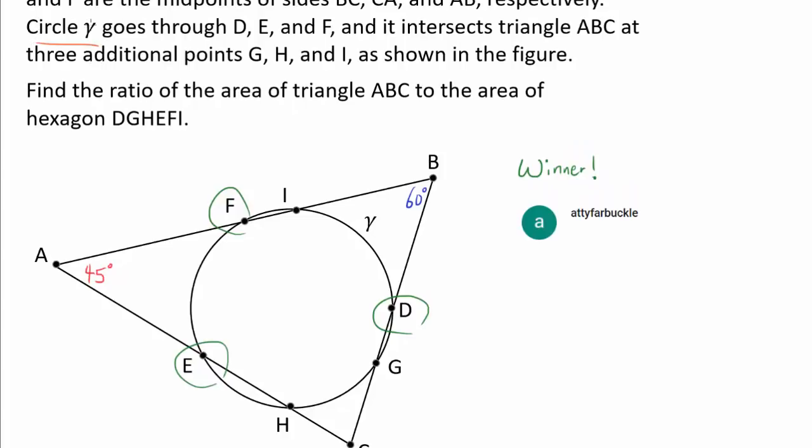And there is this circle gamma, which is right here, going through the points D, E, and F, intersecting ABC also at the points G, H, and I.